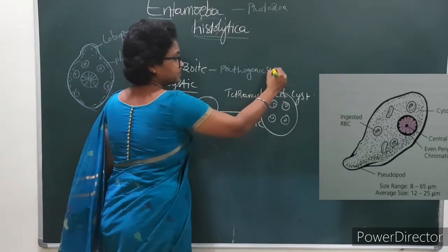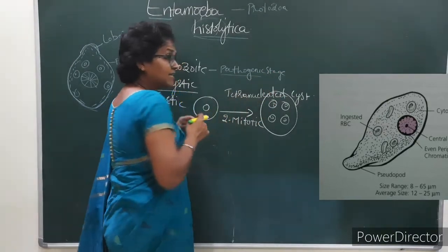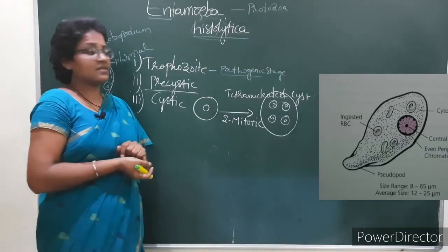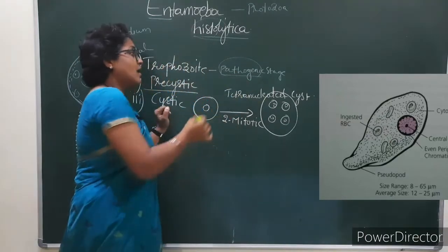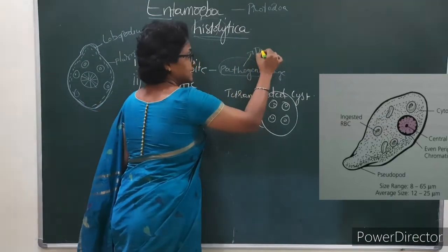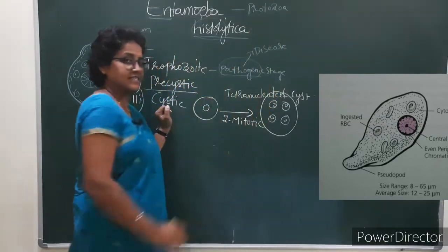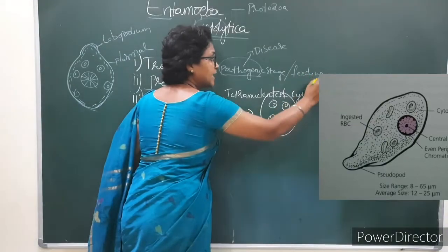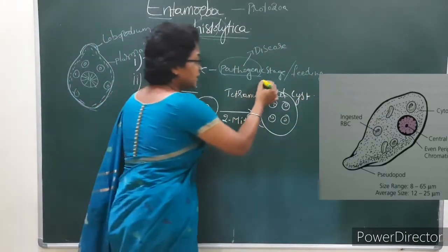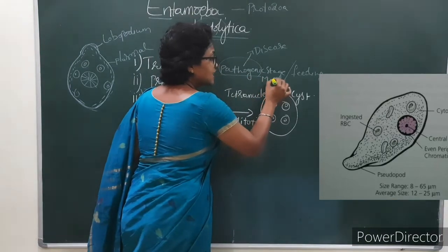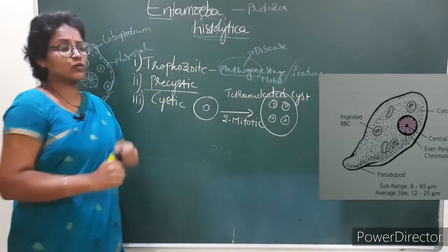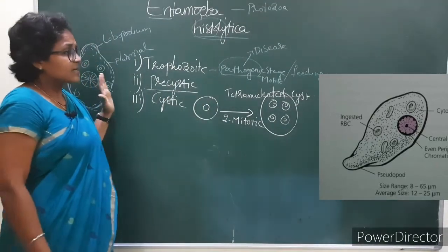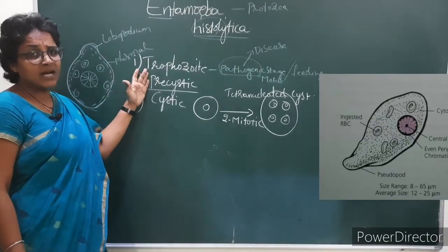The pathogenic stage is the stage that causes amoebiasis — it causes disease. It is also a feeding stage, and it feeds upon the mucosa and submucosa layers of the human being. It is motile — meaning it moves from one place to another. That is about the trophozoite stage of Entamoeba histolytica.